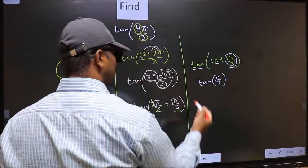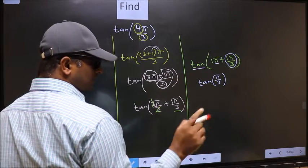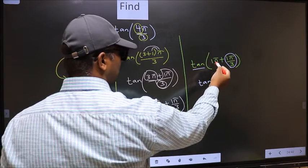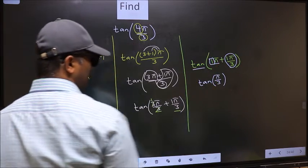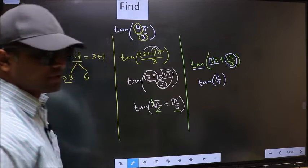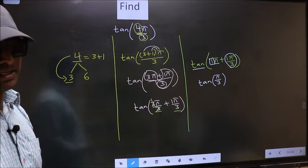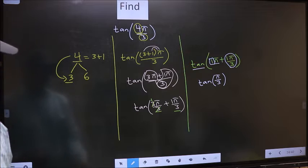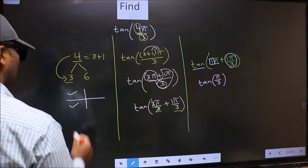Now the question is, will we get here plus or minus? To answer that we should look at the number before π, which is 1. And 1 is odd. And all the odd multiples of π lie in either the second or the third quadrant.